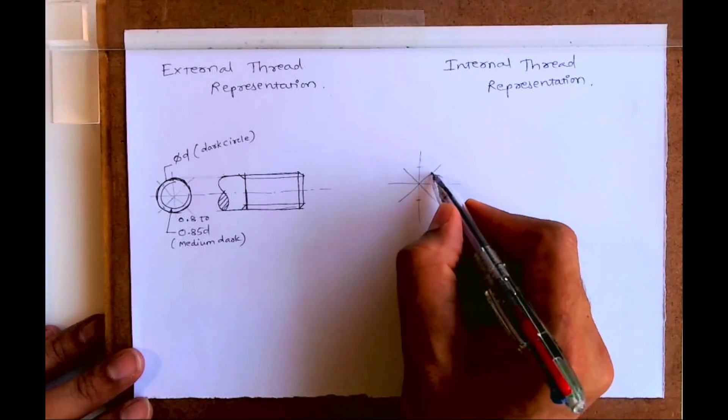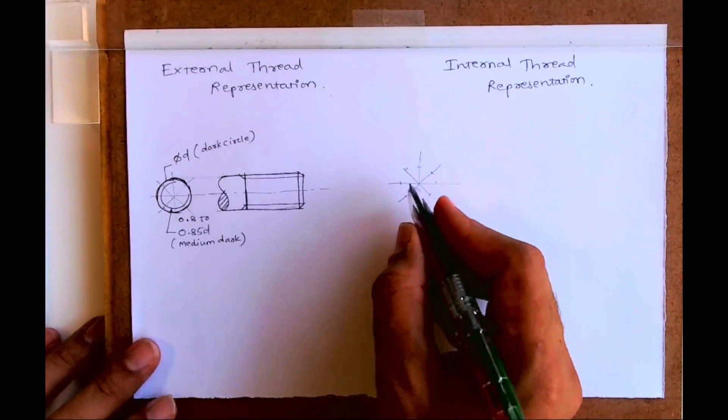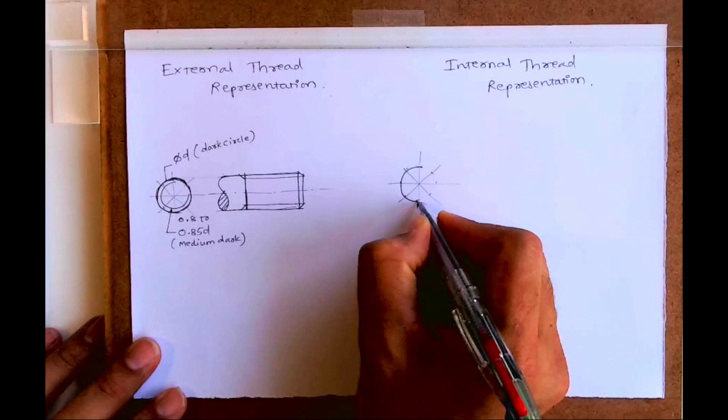Now for internal thread, the outside circle will be three-fourths. That is the main difference between internal and external.